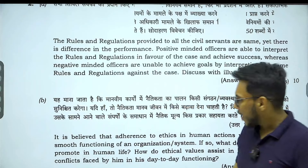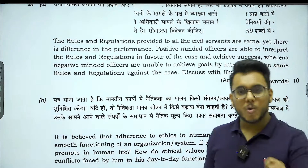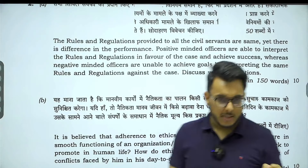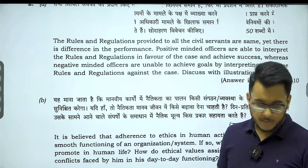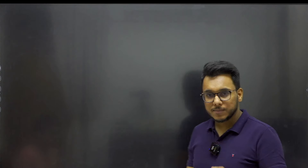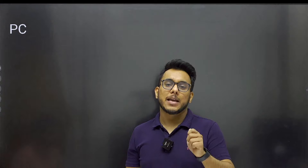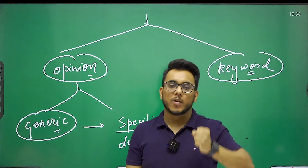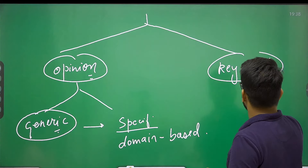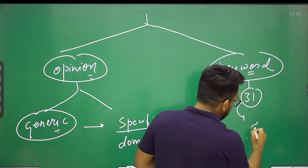Now secondly, I told you there is one more type of question: keyword-based questions. Understand this — when we talk about the paper, in the entire paper we have eight units, and in these eight units, there are broadly 31 keywords. For example, emotional intelligence is one keyword, probity is one keyword, integrity is one keyword, empathy and compassion are keywords. In total there are 31 keywords spread across eight units of the syllabus.